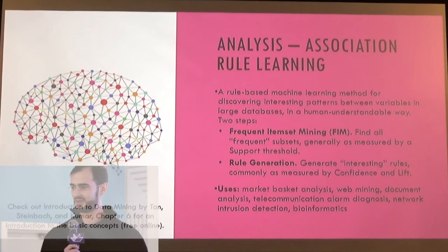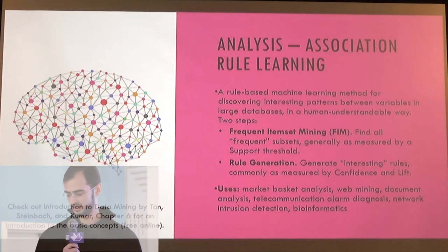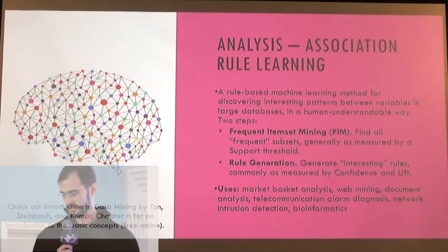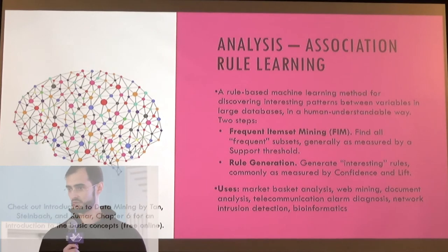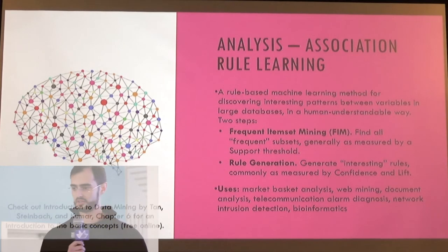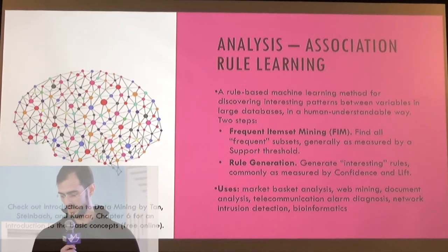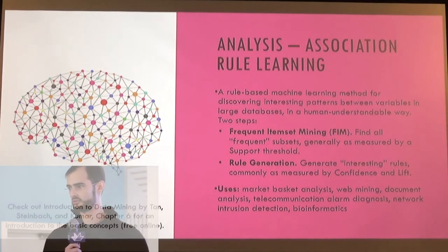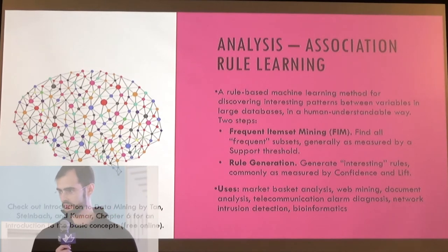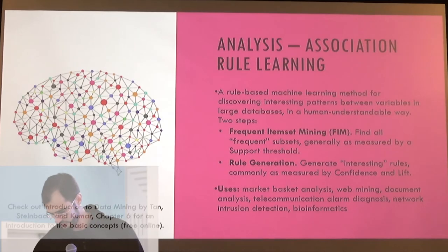Specifically, the recommendation tool is built using association rule learning. It's a method for discovering interesting patterns between variables in a large dataset, and most importantly it's human-understandable and doesn't require a ton of data. It's made up of two steps: first is frequent item set mining, where you find all subsets of combinations of your data that appear frequently above a minimum threshold. Then you use that to create rules based on a measure of interestingness — the one I used primarily is confidence. An example rule would be: a person who can eat chicken and can eat apples can eat beef with 87% confidence.